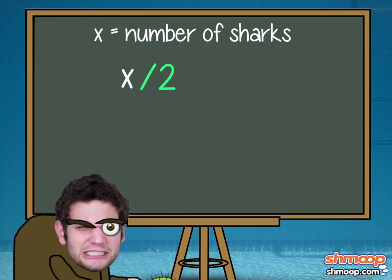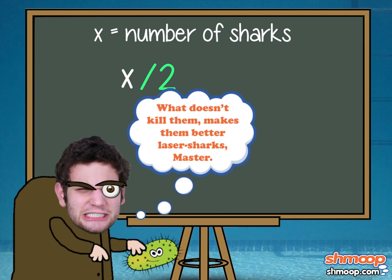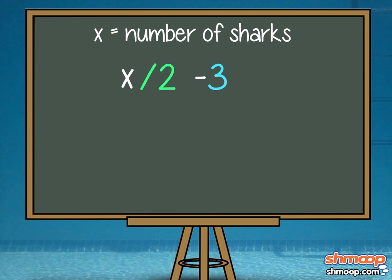Guess someone should have washed their hands a little better, huh? Then Bill ate three of the sharks, so we'll subtract three. We know there was only one shark left, so we can put one to the right of the equal sign. Our goal is to get x all by itself on one side, so let's get rid of that pesky minus three. We can do that by using the opposite operation and adding three to both sides. Remember to always perform the same operation on both sides — Dr. Villain is fair that way.